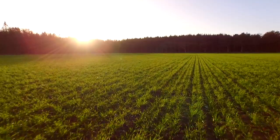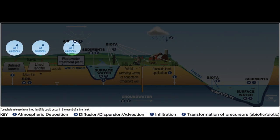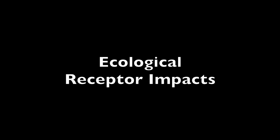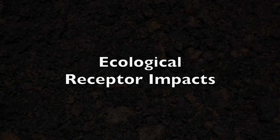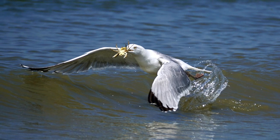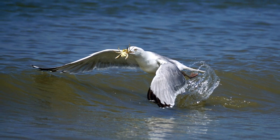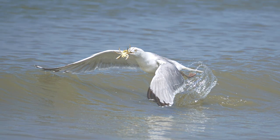PFAS have also been measured in the air near landfills and wastewater treatment plants. Exposure to PFAS at release sites may occur through ingestion of PFAS-contaminated food, soil, or water. Ecological receptor impacts are primarily from direct contact with contaminated soil, sediment, and surface water. The consumption of PFAS-contaminated fish, shellfish, and other invertebrates is also a concern for both humans and wildlife.